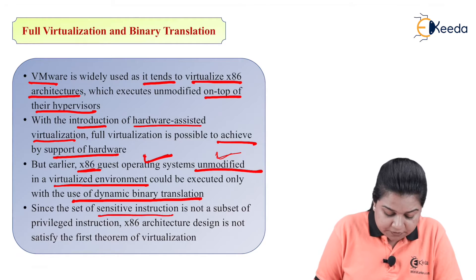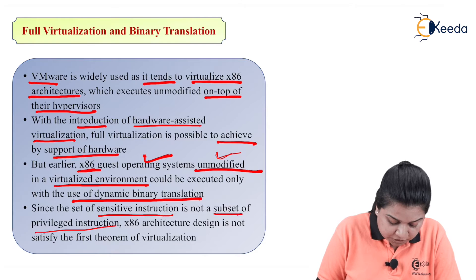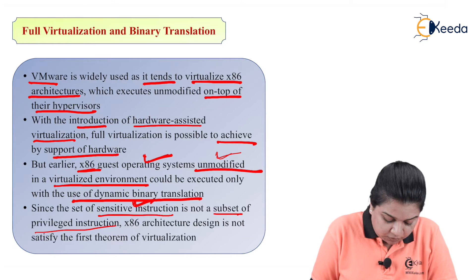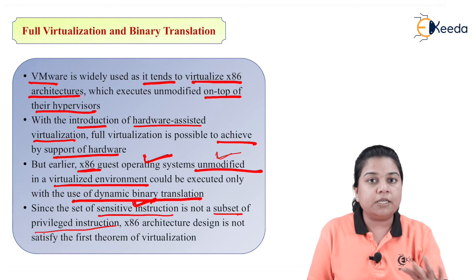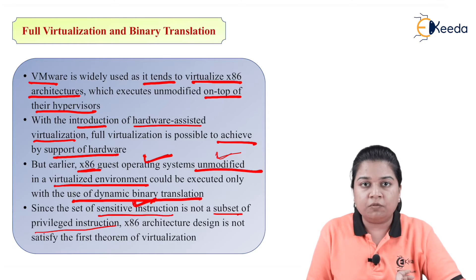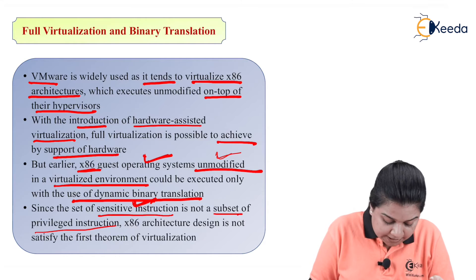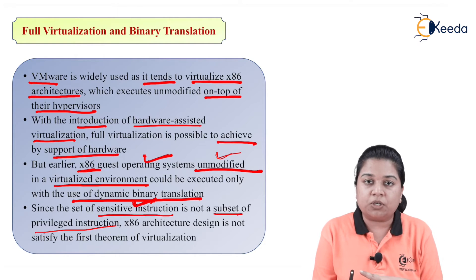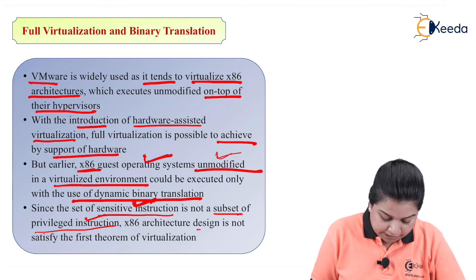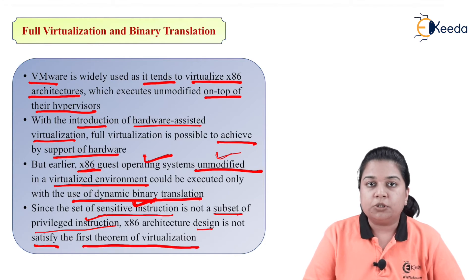The set of sensitive instructions is not a subset of privileged instructions. Privileged instructions have behavioral and control sensitive information, but not all sensitive instructions are necessarily part of the privileged instruction set. As a result, the x86 architecture design does not satisfy the first theorem of virtualization.